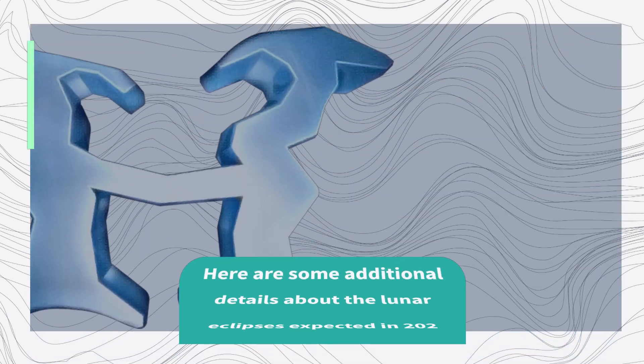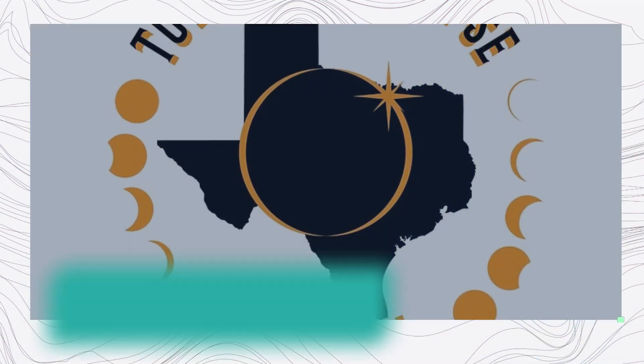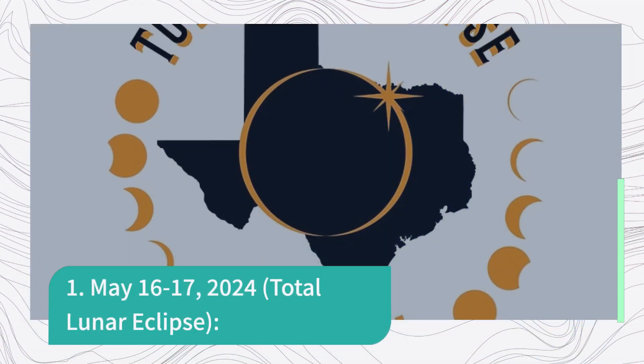Here are some additional details about the lunar eclipses expected in 2024. 1. May 16-17, 2024, Total Lunar Eclipse.